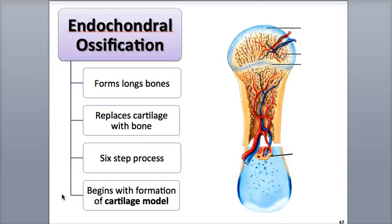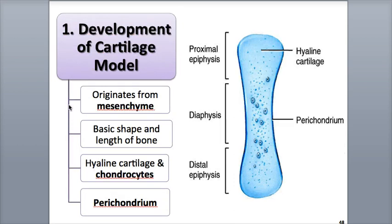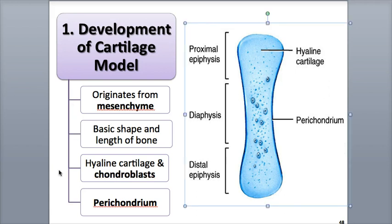Endochondral ossification begins with the formation of the cartilage model. At the location of the new bone, mesenchyme cells cluster together and take on the basic shape of the bone that will develop. These cells then become chondroblasts — the prefix chondro refers to cartilage and the suffix blast means to build. These cells start secreting cartilage extracellular matrix and develop into the cartilage model made of hyaline cartilage. The perichondrium develops around the cartilage model, acting as a covering to contain the cell cluster and maintain the overall shape and length of the model.